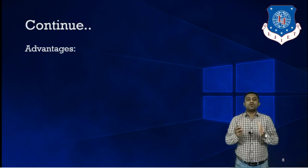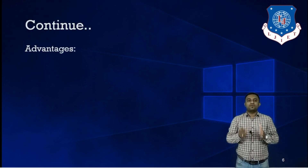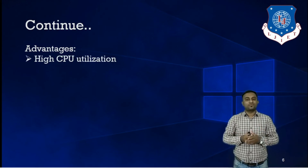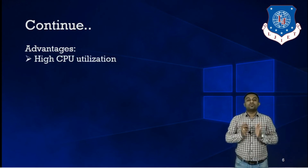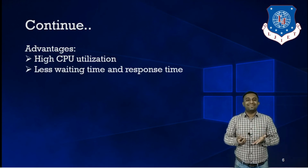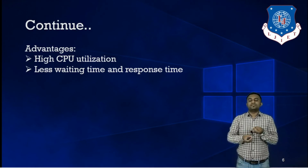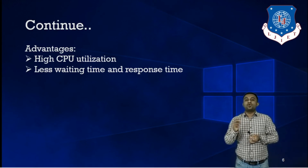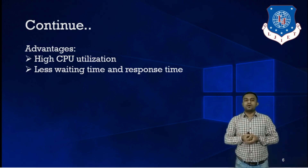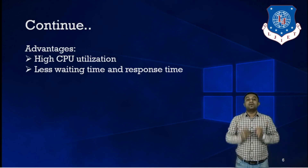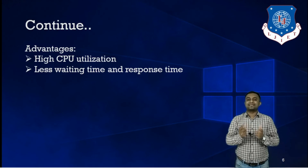Now that we understand the working mechanism of multiprogramming operating system, let's discuss its advantages. The most important advantage is high CPU utilization — the utilization of CPU is very high in multiprogramming. Second is least waiting time and response time. If any process is waiting for IO devices, the CPU will not wait; it will instantaneously fetch another process which requires the CPU for its execution and start executing it, so waiting time and response time are improved.